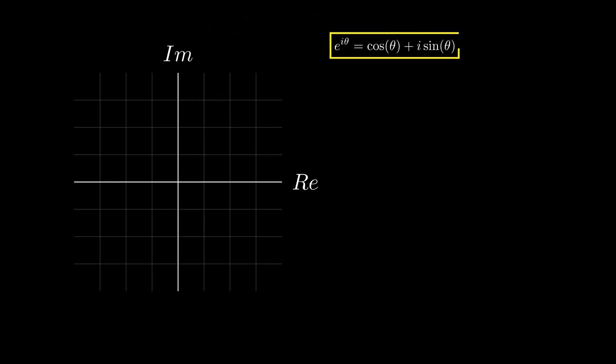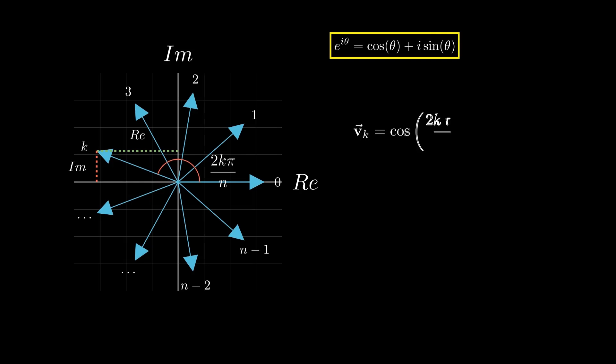In this context, we are going to shift these vectors into complex planes. Here, each vector can be represented as a complex number, where the x component cos(2kπ/n) corresponds to the real part, and the y component sin(2kπ/n) corresponds to the imaginary part. Thanks to Euler's formula, these vectors can also be written in exponential form, e to the i(2kπ/n).